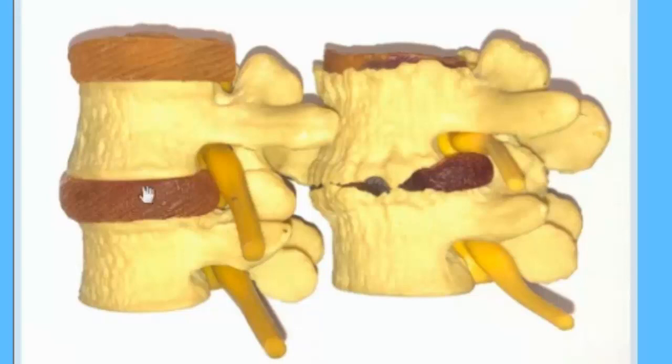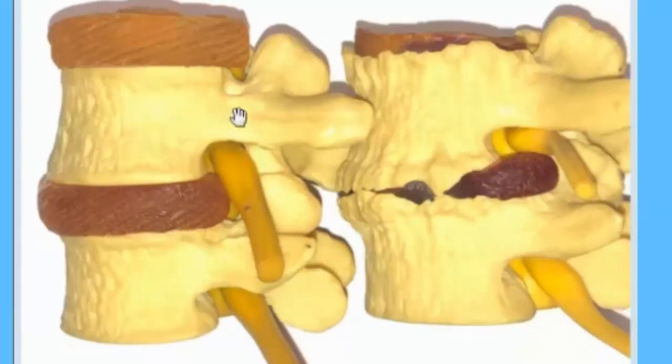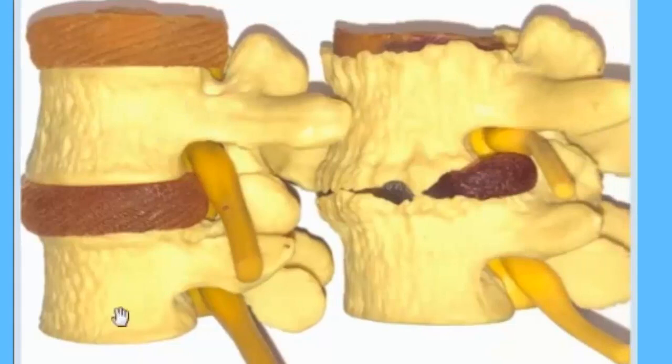It's a big vertebra, so you know it's a lumbar spine. Here's the vertebra below, so this is a spinal motor unit, and in between is a disc from the side.